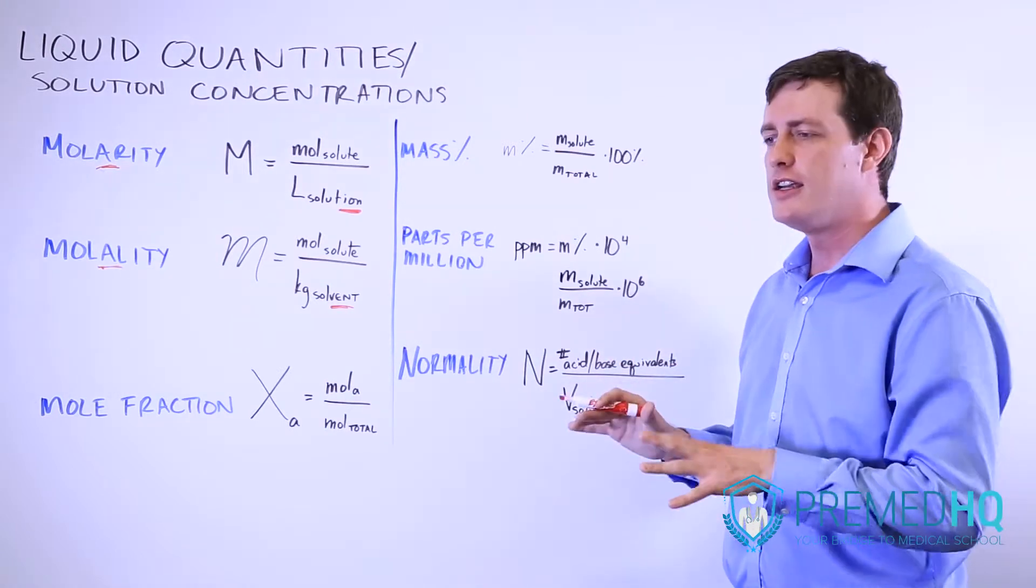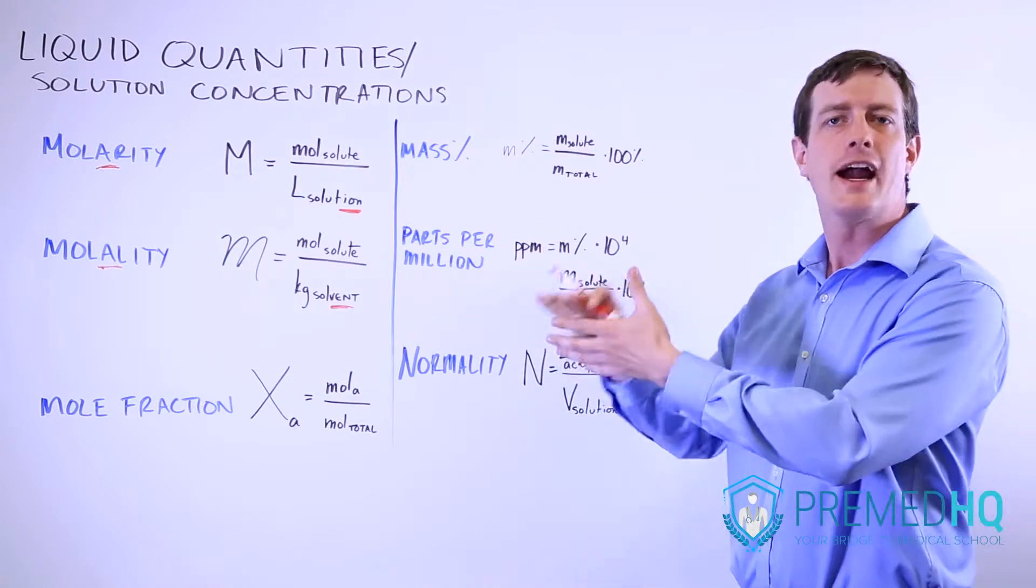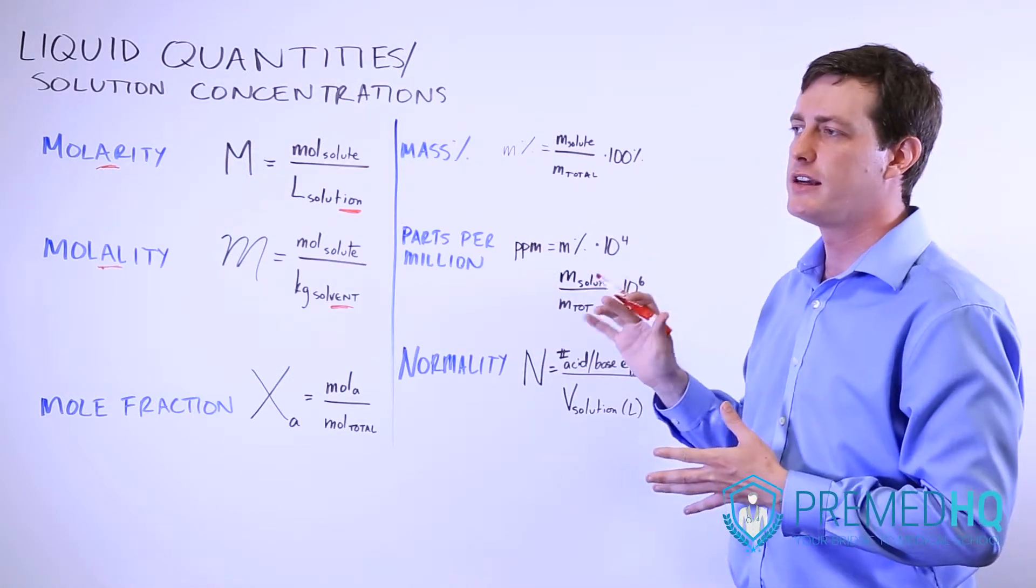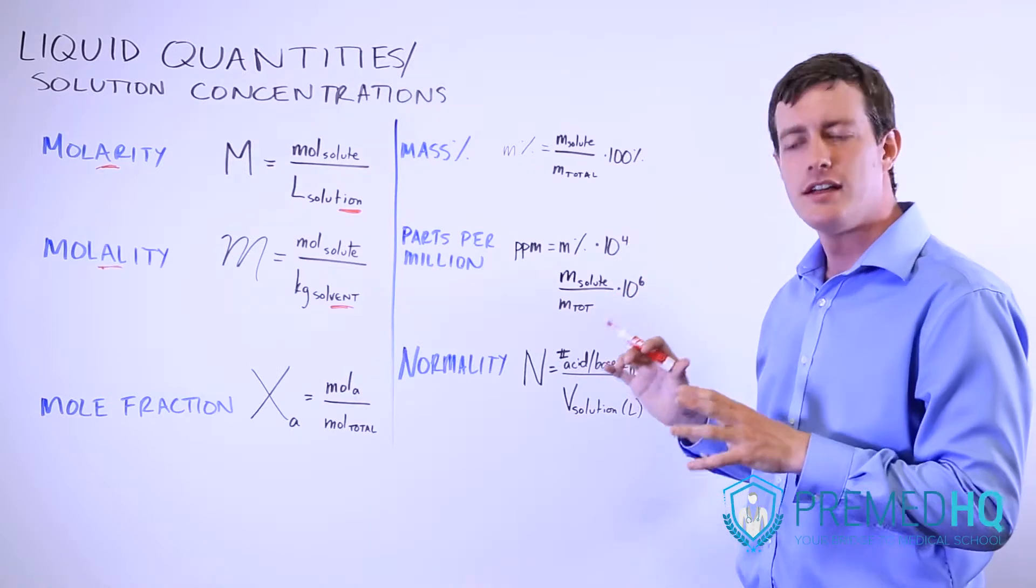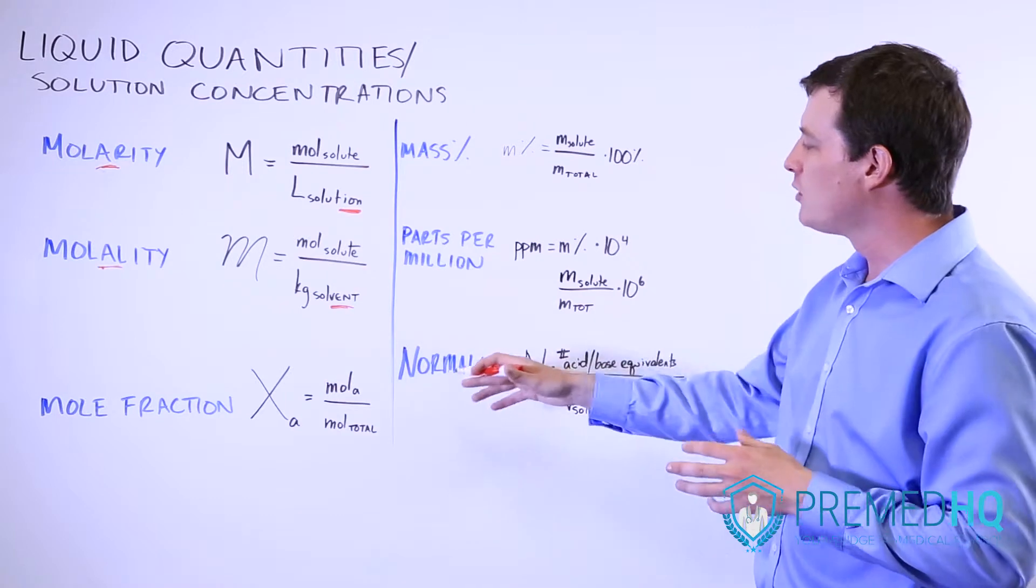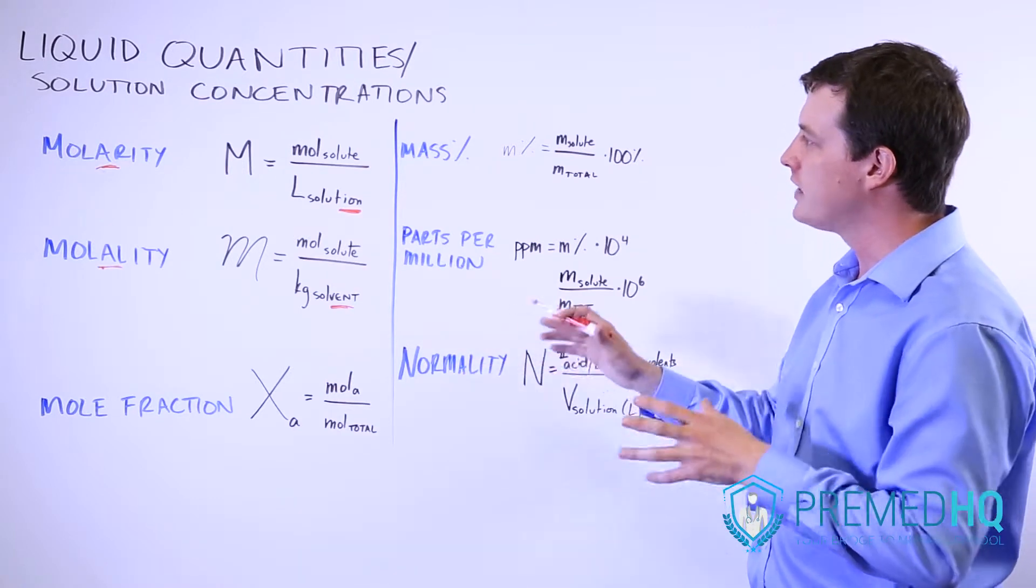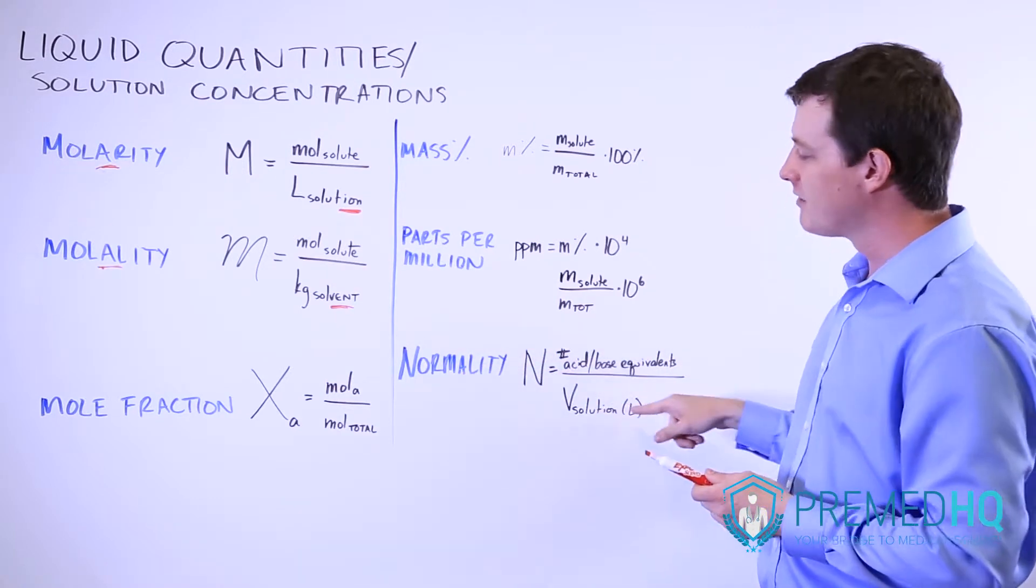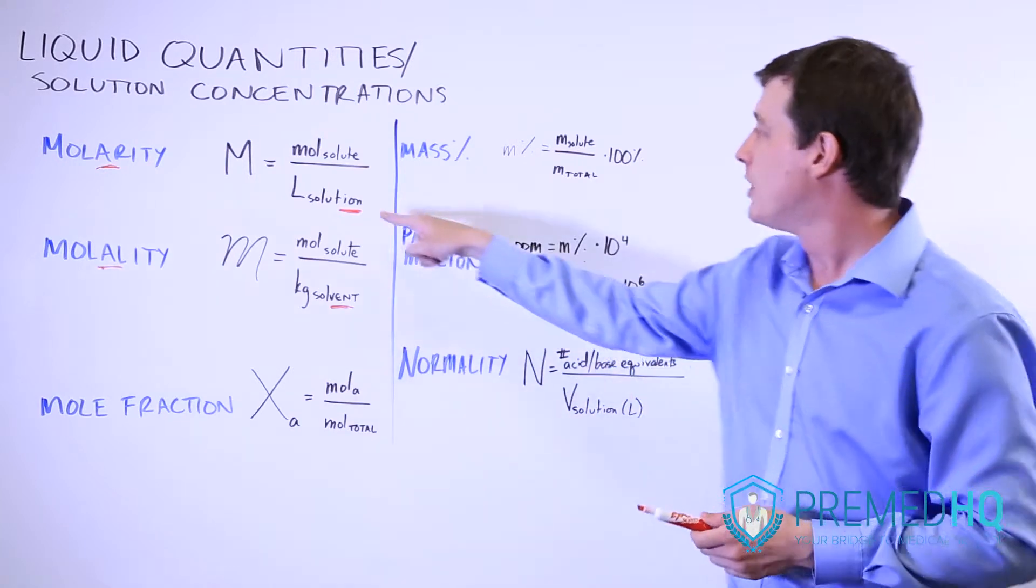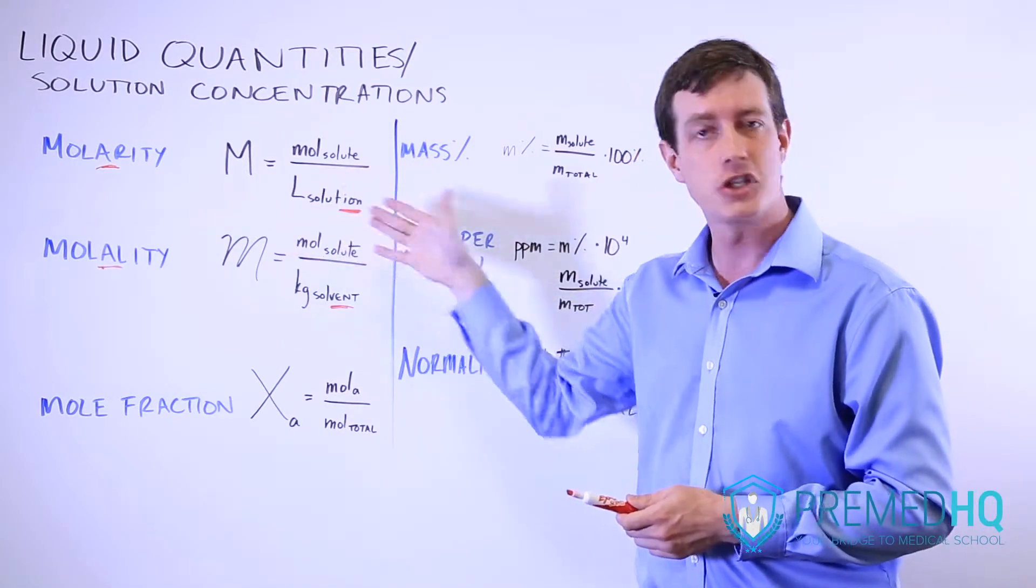Base equivalents are the number of protons that they can react with. So a base equivalent would be something that could theoretically interact with one mole of protons. There's a simple way of figuring out normality based on molarity because they have the same units. Notice that we're looking at the volume of the solution in liters, much like we're looking at the liters of solution down here.